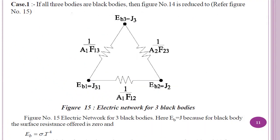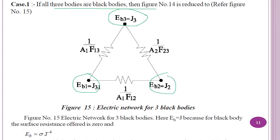In the next video we will solve some numerical problems. Now we consider special cases. The first special case: if all three bodies are black bodies, the surface resistance is zero, meaning Eb₁ = J₁, Eb₂ = J₂, and Eb₃ = J₃. The circuit reduces to only the space resistances, and we write equations for the three networks and solve.